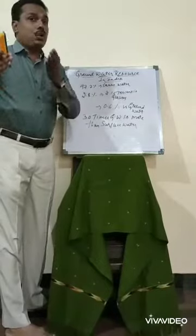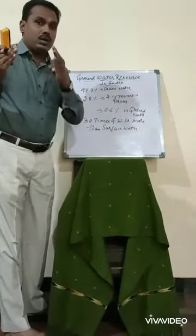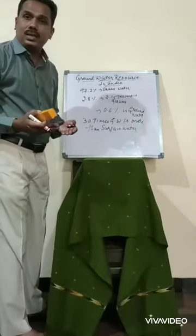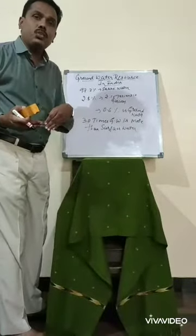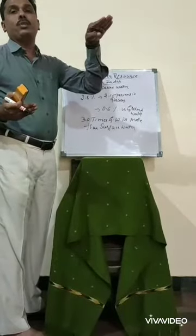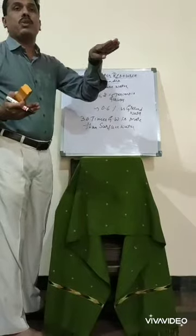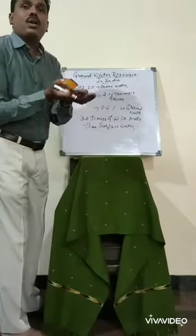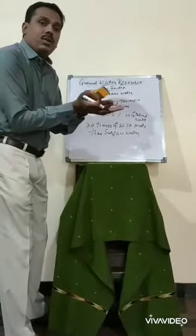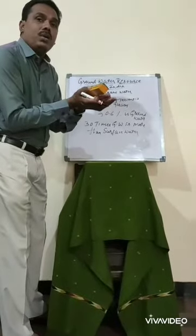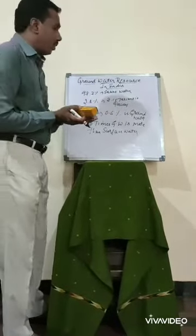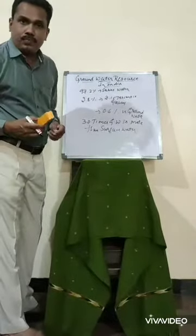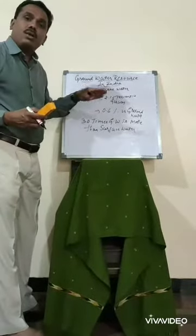The groundwater is stored under the ground. After precipitation, there will be infiltration. Through infiltration, the water table gets increased, and beneath the water table groundwater is stored. This 0.6% is the water available in the groundwater resource.